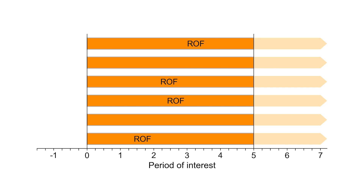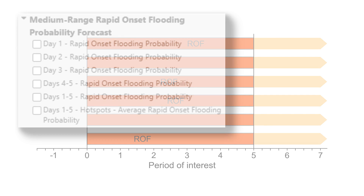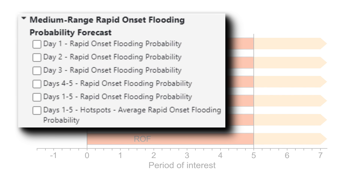Here, since four of the six members forecast rapid-onset flooding and all six ensemble members are currently weighted equally, the forecast probability of rapid-onset flooding is 67%. A forecaster may also isolate a specific period of interest within the five days.